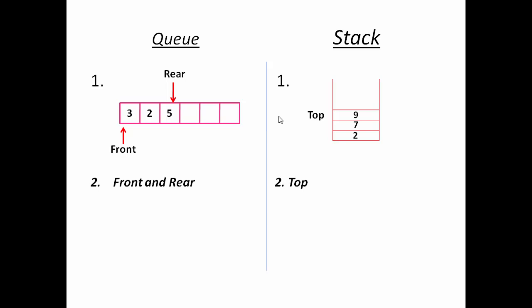In queue, first inserted element is removed first. That's why queue is called FIFO or first in first out. But in stack, last inserted element is removed first. That's why stack is called LIFO or last in first out.